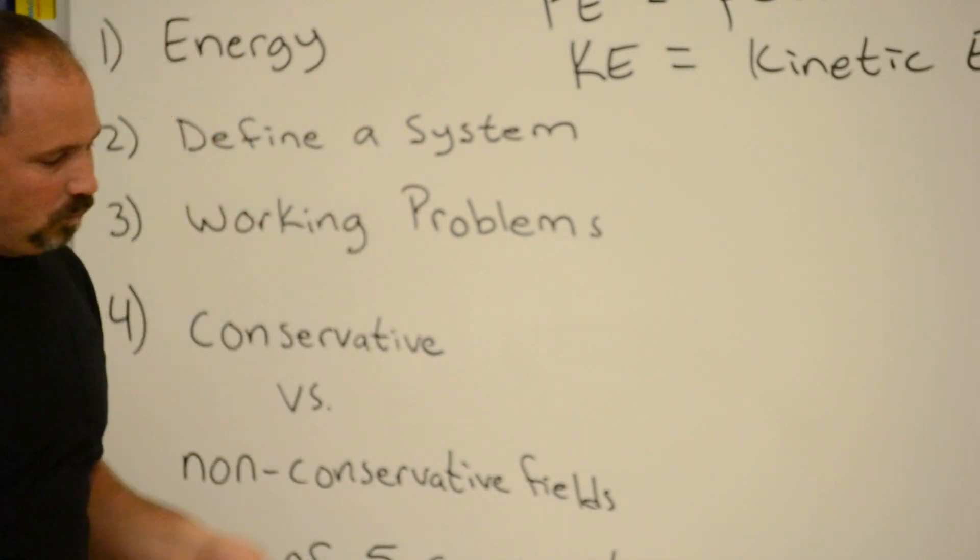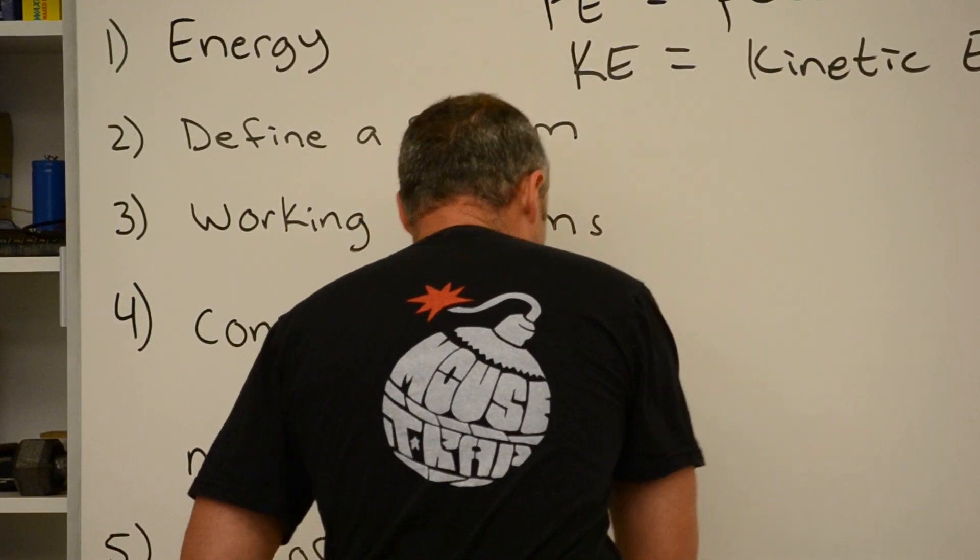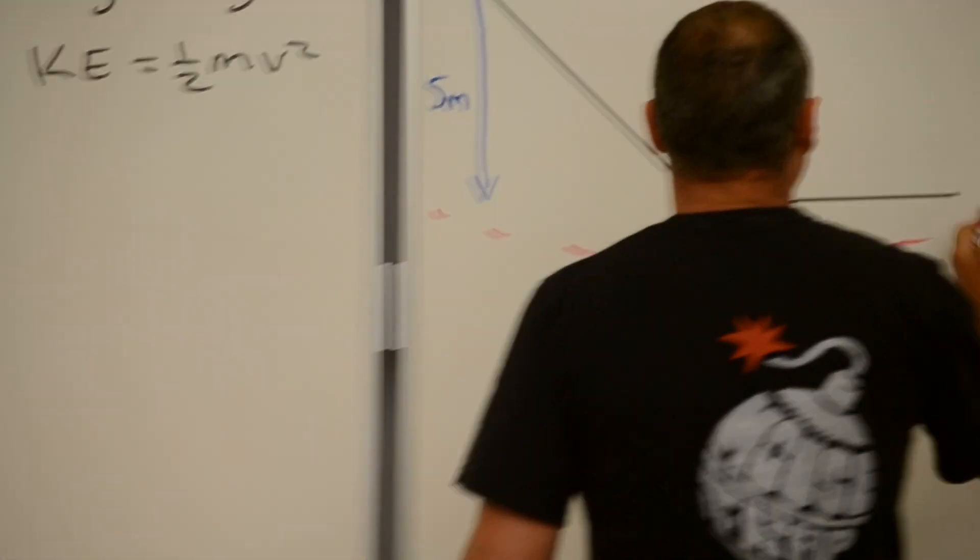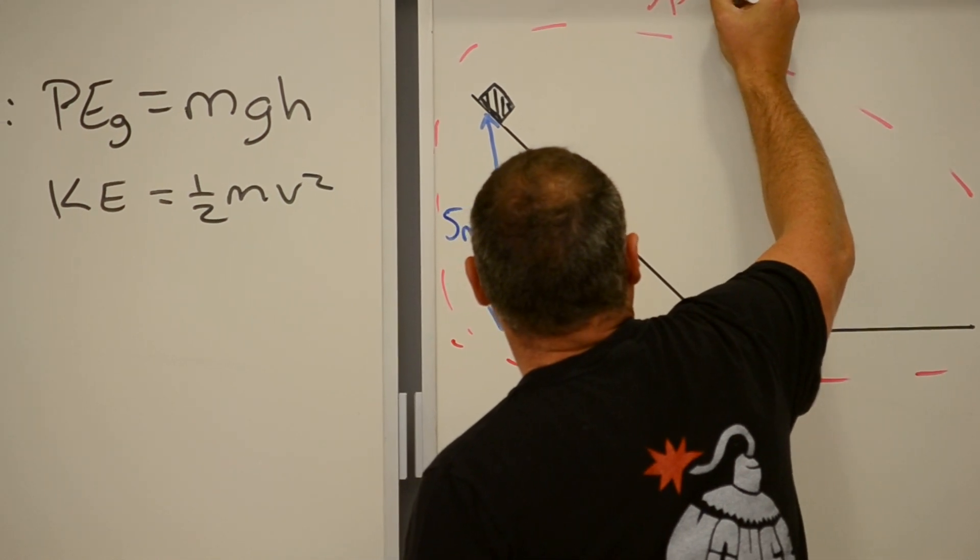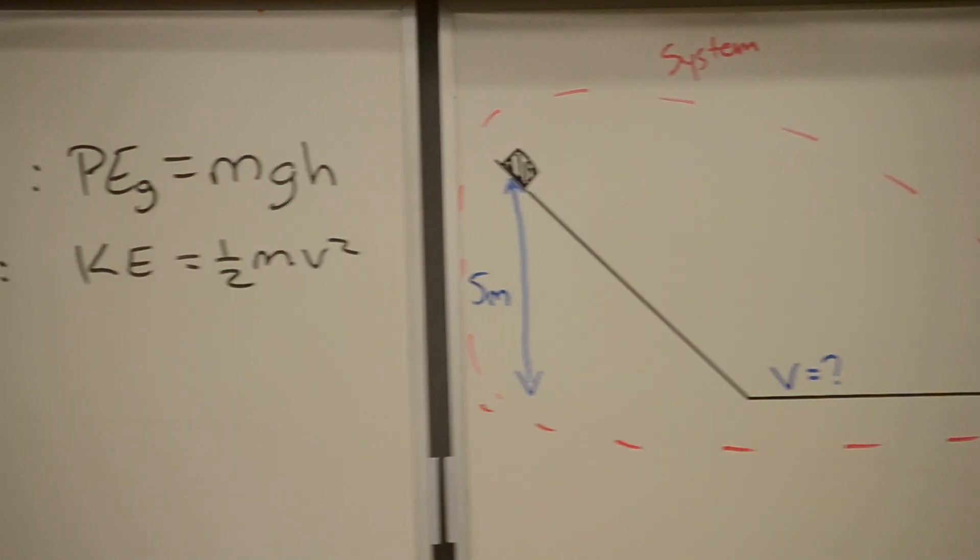But when we're defining a system, for example, the problem we're going to do soon of this box sliding down the incline, this is our system.